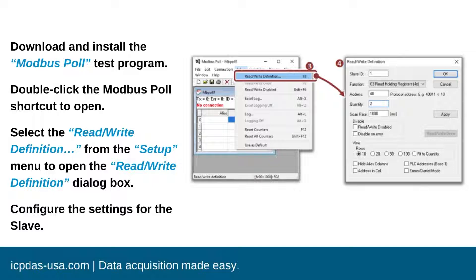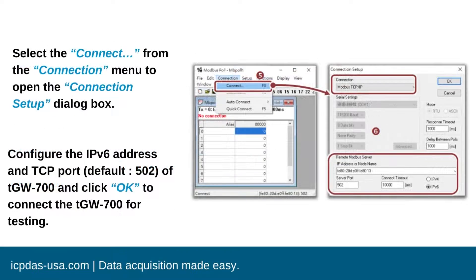To self-test, download the Modbus Poll Test Program. The link is available in the description box of this video. Open the program and select the ReadWrite Definition from the Setup menu to open the ReadWrite Definition dialog box. Configure the settings for the slave device — the settings will vary depending on your Modbus device. Select the Connect option from the Connection menu to open the Connection Setup dialog box. Configure the IPv6 address and TCP port of the TGW-700 and click OK to connect it for testing.